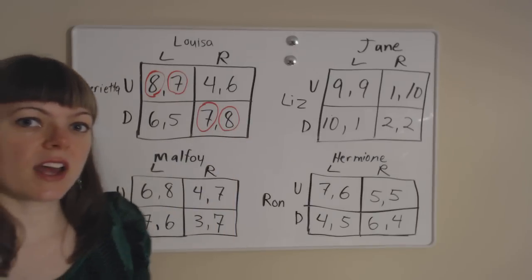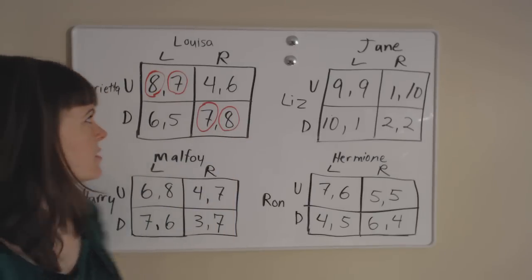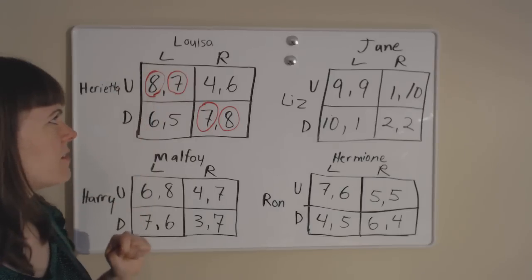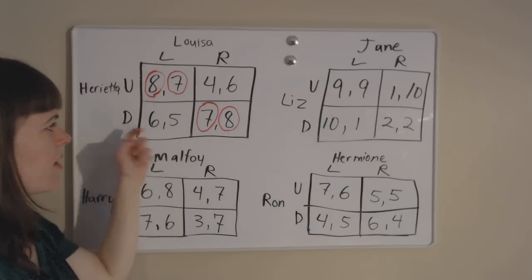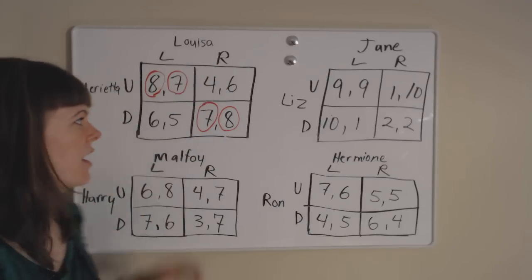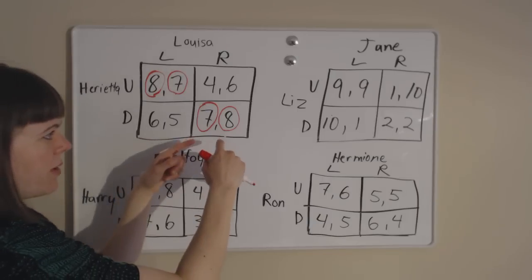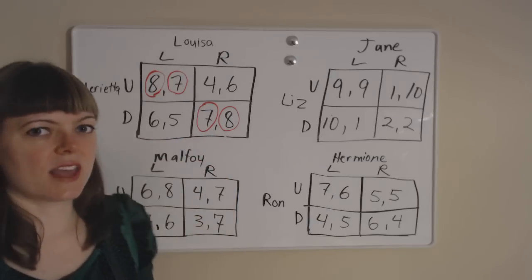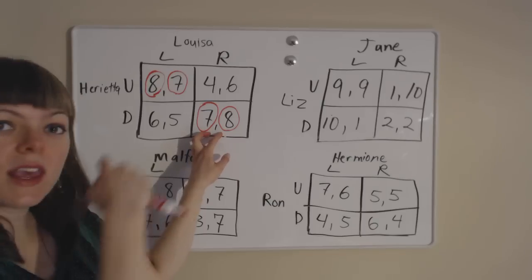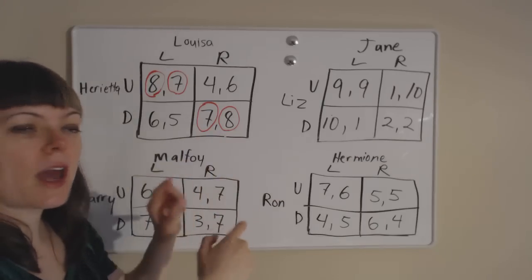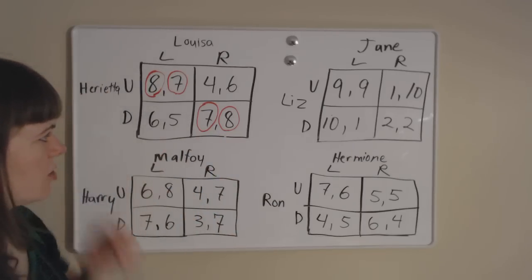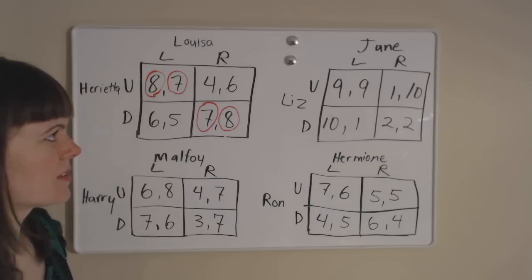So in this case we have 2 Nash equilibria. One is Henrietta going up and Louisa going left. The other is Henrietta going down and Louisa going right. In both of those outcomes, each player can say: given what the other player did, I'm happy with my choice. So 2 Nash equilibria there.